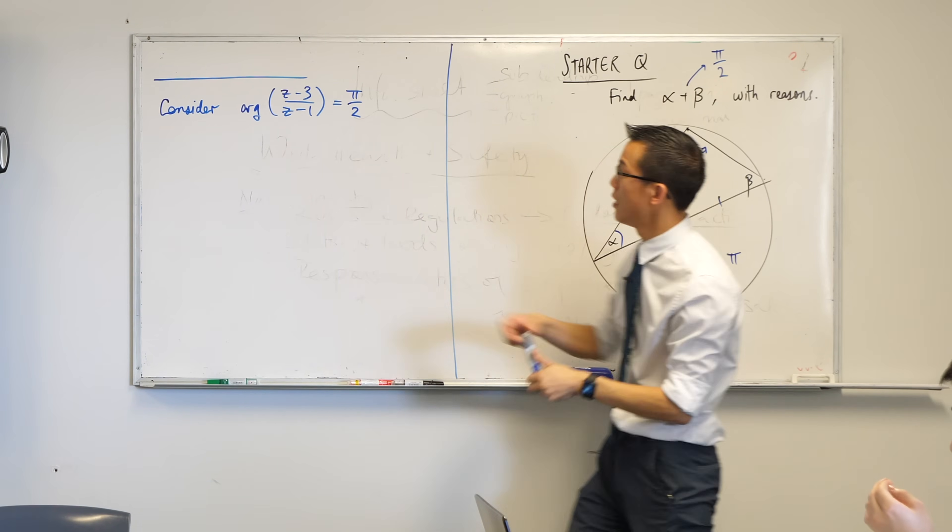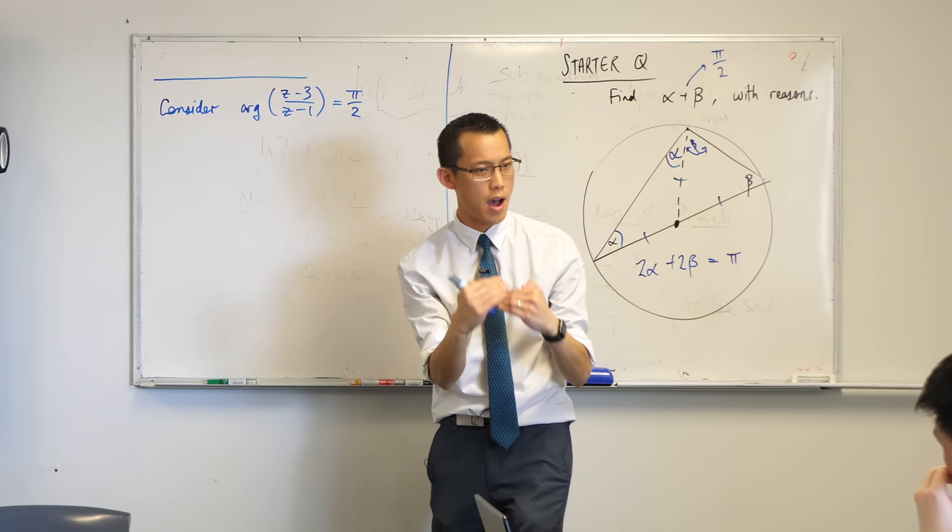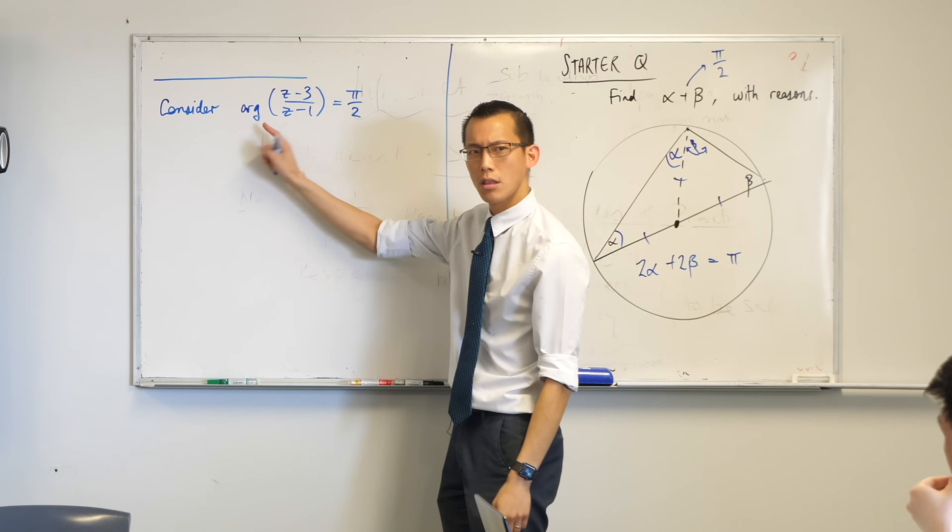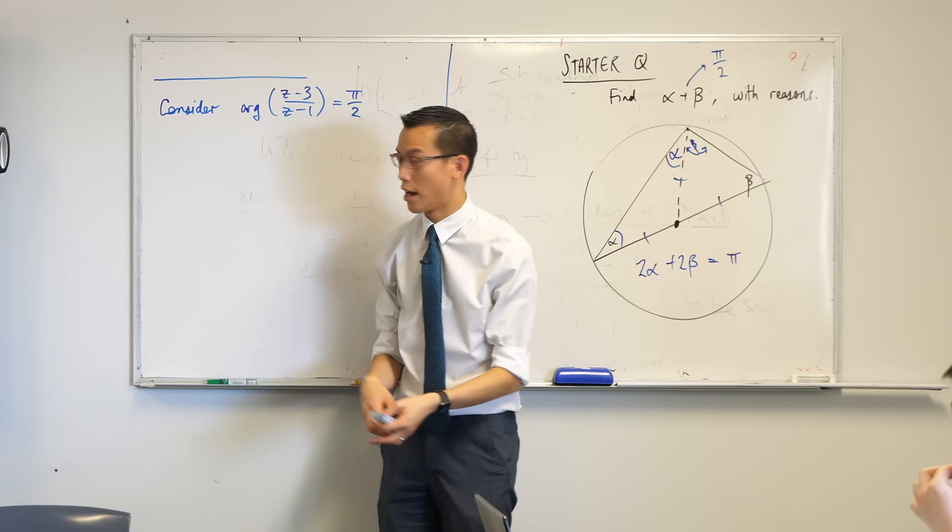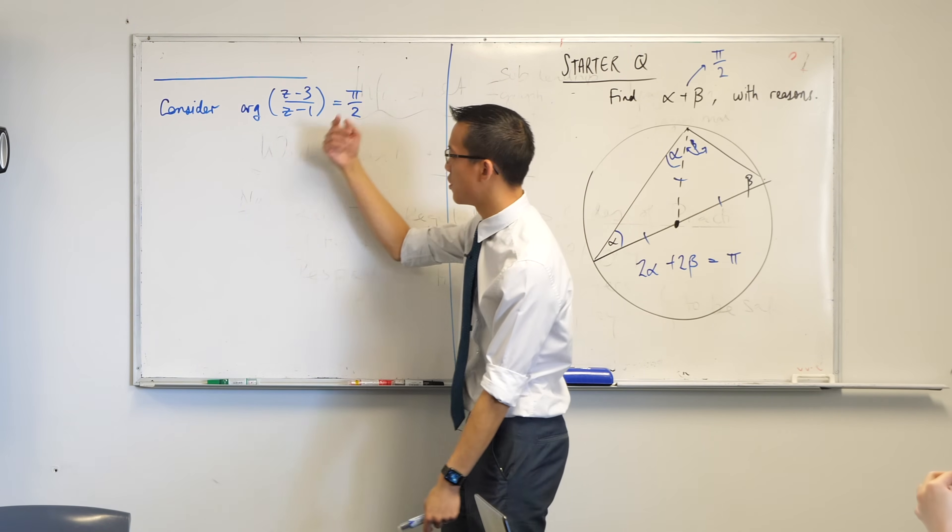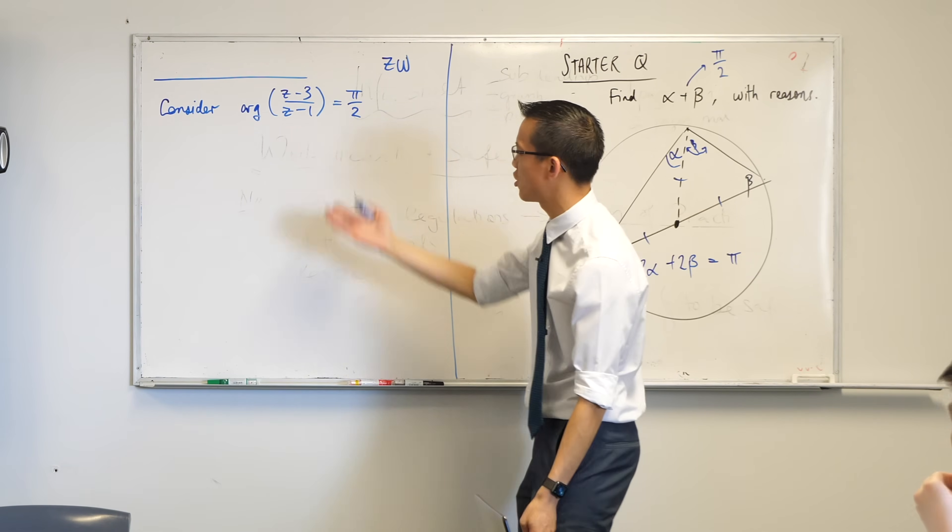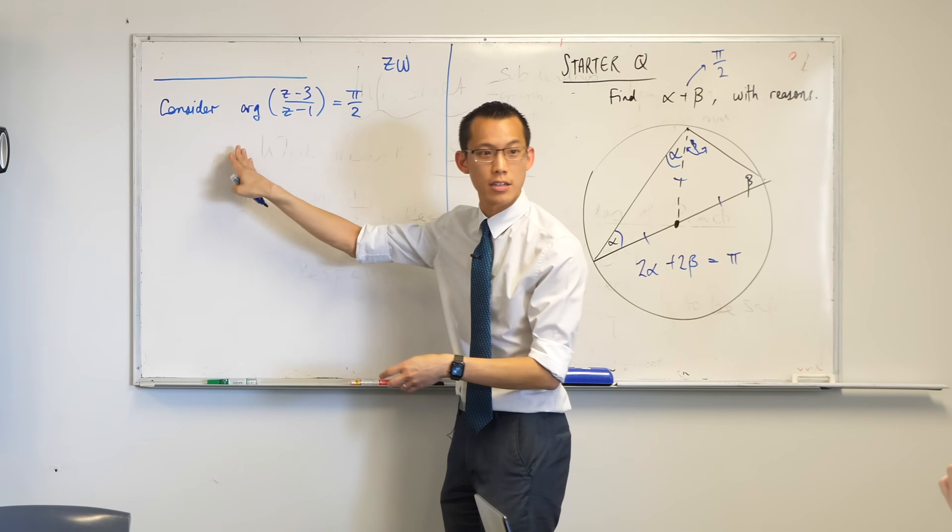When you have two complex numbers, in this case z minus 3 and z minus 1, when you divide two complex numbers one by the other, what happens to the arguments? We subtract the arguments, don't we? We usually think about it in reverse. When you multiply two complex numbers, we add the arguments. Well, this is just the same thing in reverse.